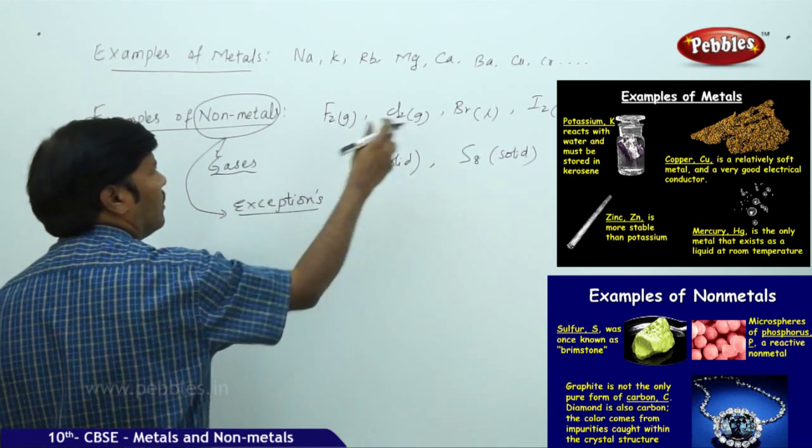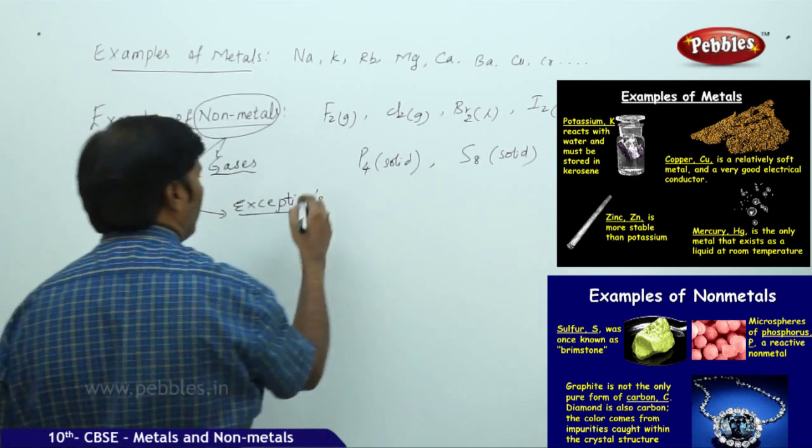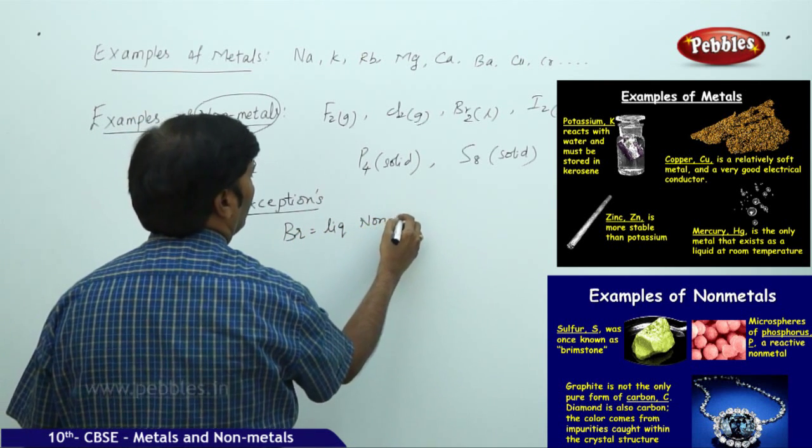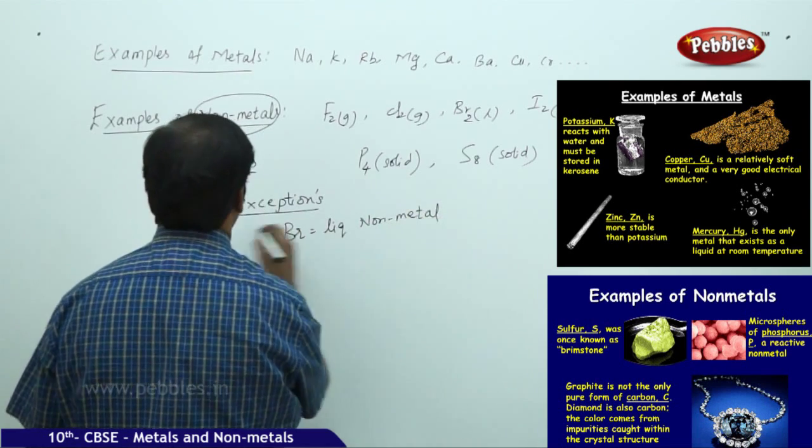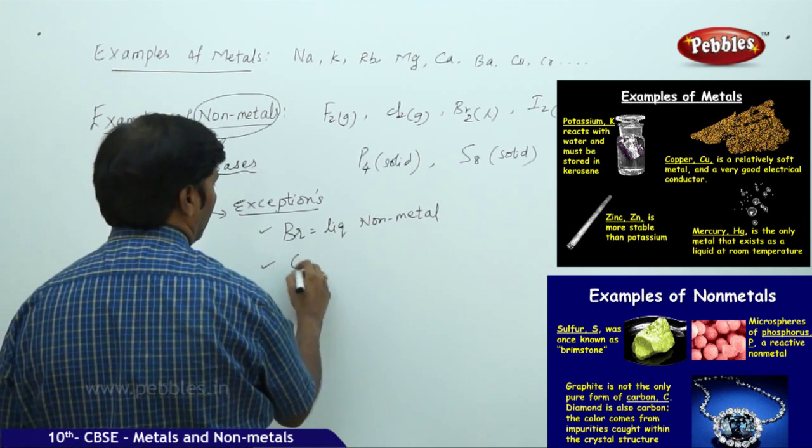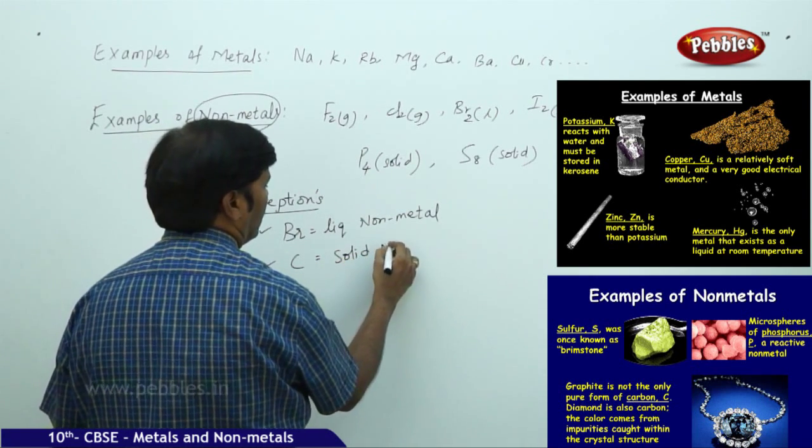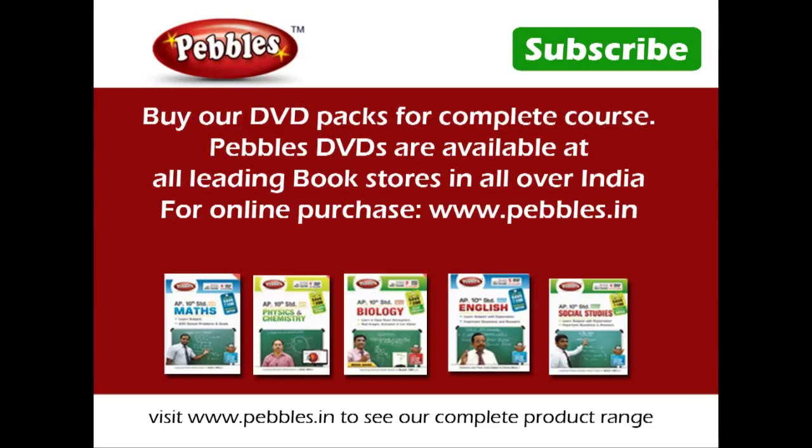If you take bromine, though it is a non-metal, it is a liquid. Bromine is a liquid non-metal. Similarly, carbon is a solid non-metal.